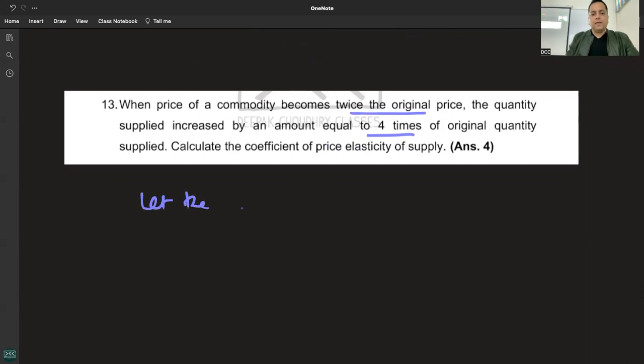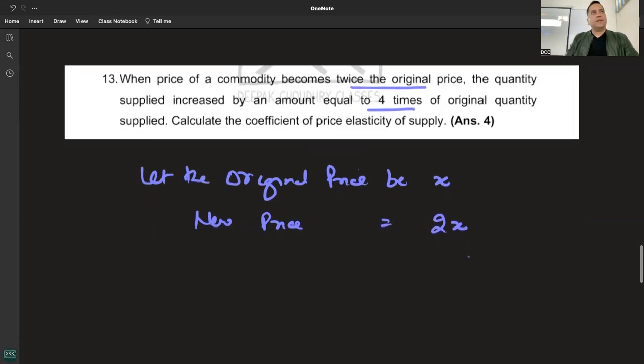Let the original price be X and the price of commodity becomes twice. New price is 2X.